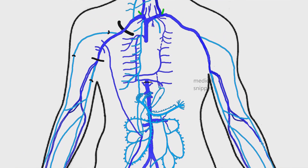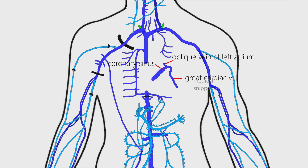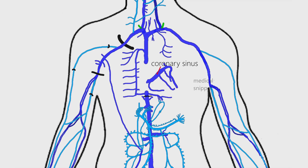Now let's discuss the cardiac venous drainage. The great cardiac vein and the oblique vein of the left atrium unite to form the coronary sinus. The great cardiac vein runs along the left anterior descending artery. The other tributaries of the coronary sinus are the small cardiac veins, the posterior vein of the left ventricle, and the middle cardiac vein, which runs along the posterior descending artery. The coronary sinus opens into the right atrium, often guarded by the Thebesian valve. There are also anterior cardiac veins which drain directly into the right atrium, and veni cordis minimi, which open into different chambers of the heart via the foramina minimarum.